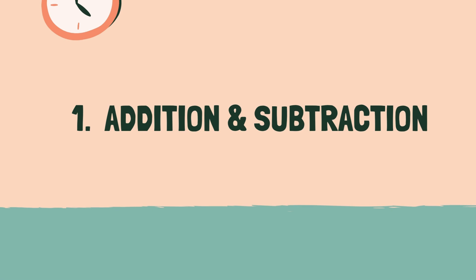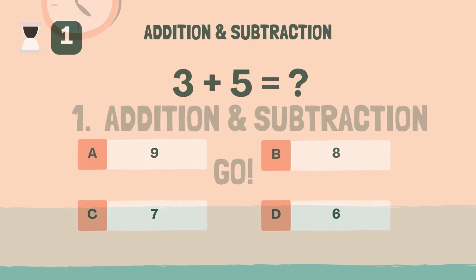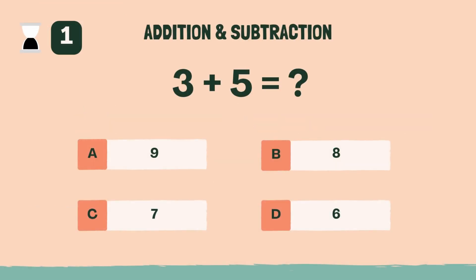Category 1, Addition and Subtraction. 3, 2, 1, go. What is 3 plus 5? B, 8. What is 6 minus 2? C, 4.